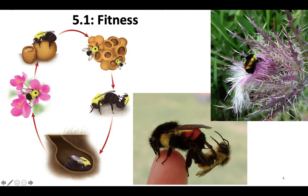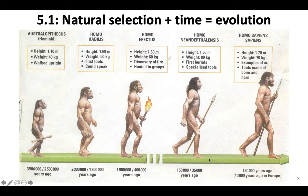From one queen, you'd measure how many queens she then produced. You might use the number of workers as an indirect measure, but you're not really measuring how many offspring she's contributing to the next generation unless you measure the one that's reproducing. This is a beautiful bumblebee I studied for my dissertation — a queen mating with a male. The combination of natural selection plus time over millions and millions of years is what results in evolution. We'll talk about natural selection at the population level and also what happens over millions of years, resulting in the evolution of new species.